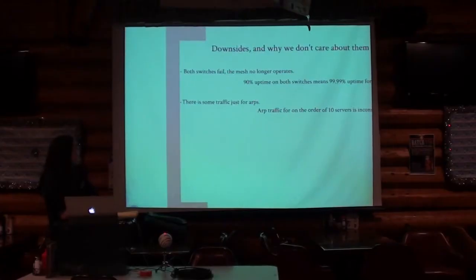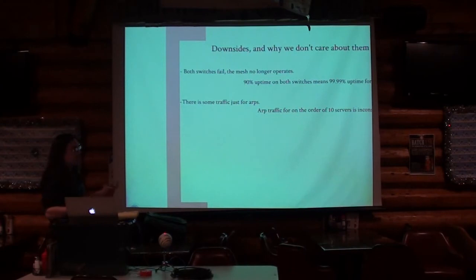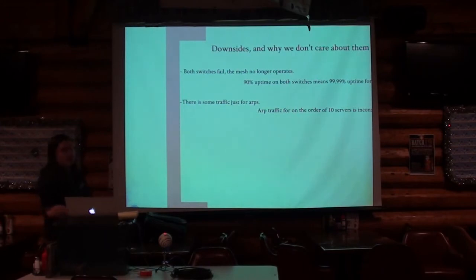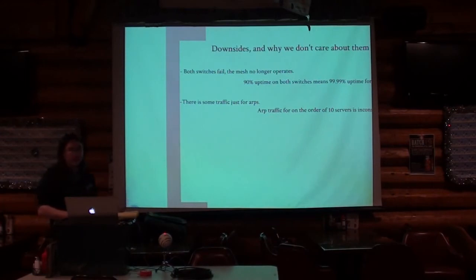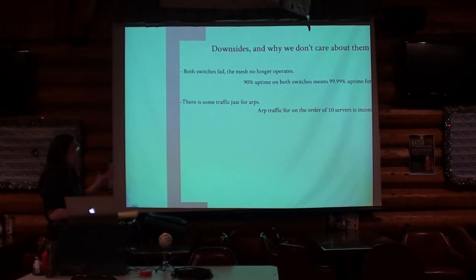If both switches fail, the mesh doesn't work. But even with 90% uptime on two nodes, you still get four nines uptime for the whole network. You can head over to a low-end box provider and get a year's worth of a tiny VPS for $20 a year — so two of those at $40 a year and you have a mesh VPN. In switch mode there's some broadcast traffic for ARPs looking up MAC addresses, but on the order of 10 to 99 servers that traffic is inconsequential.